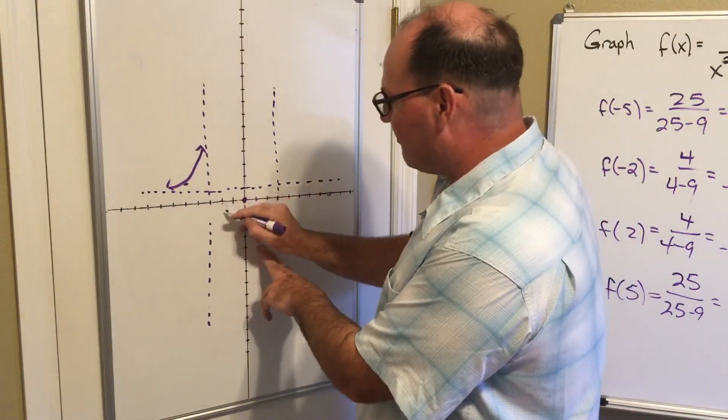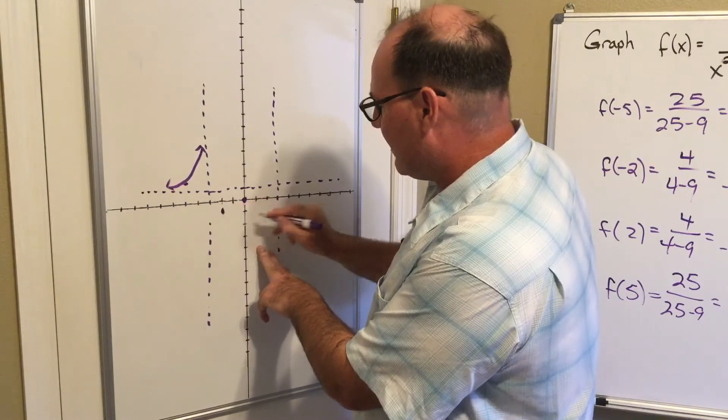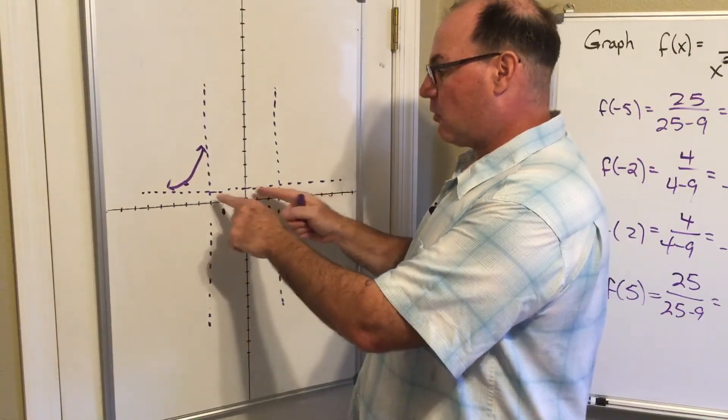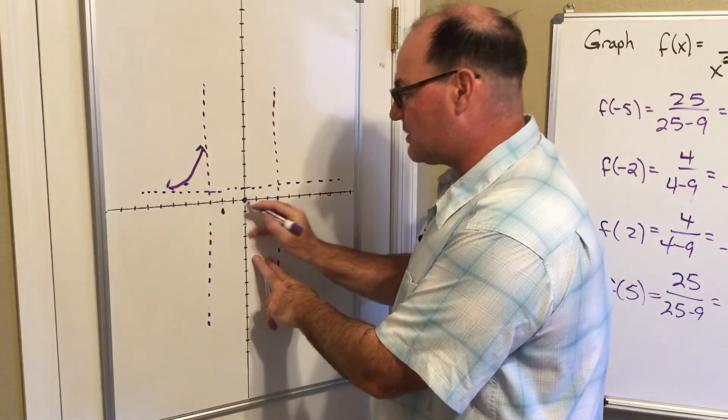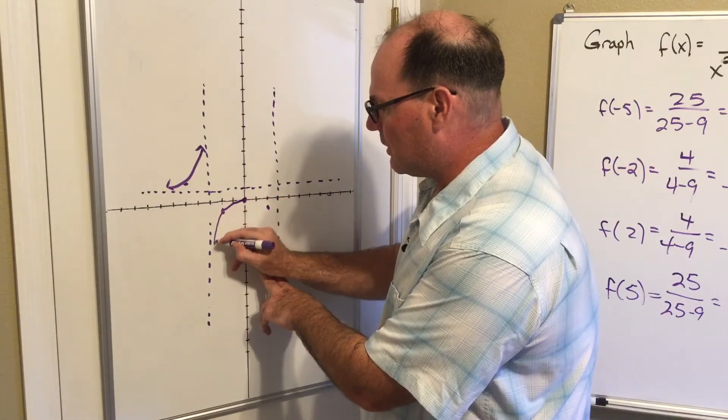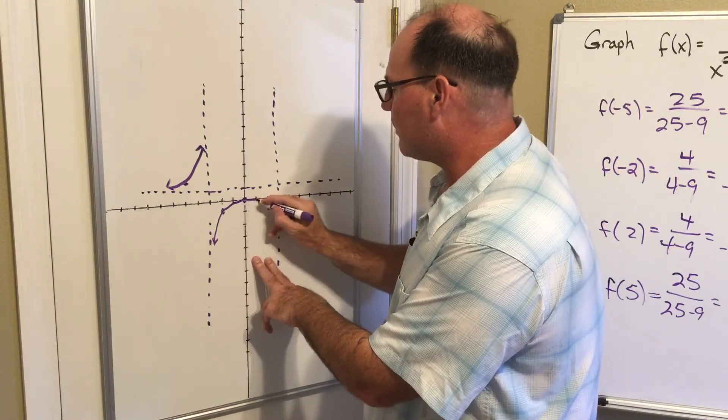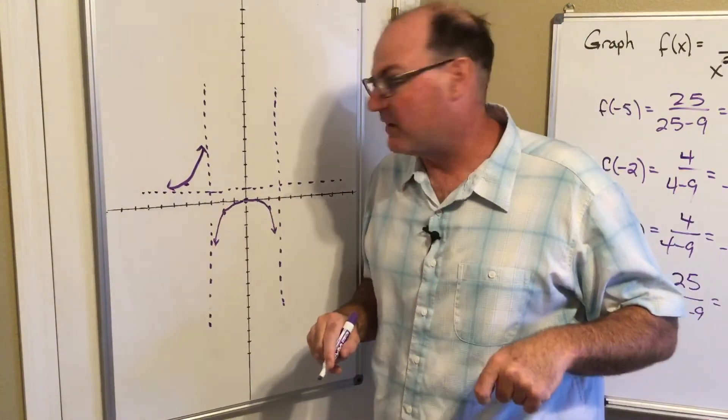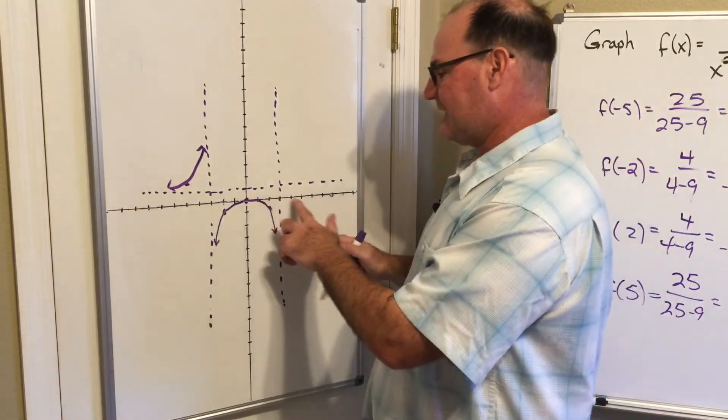In between here at negative two and positive two, I got negative four fifths. So what this means now, because the graph never goes through this horizontal asymptote, is that as I go this way the graph is going to go through that point and it's just going to go down. As I go through this point it's going to go down, so we got like a little mini parabola there in the middle.